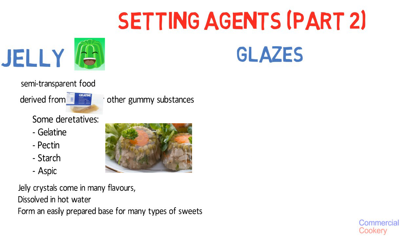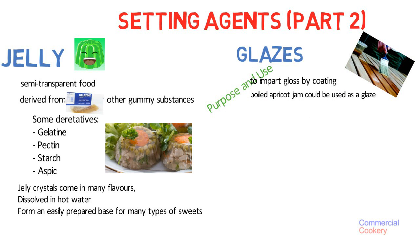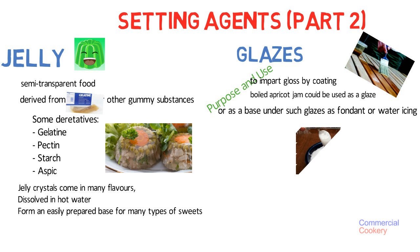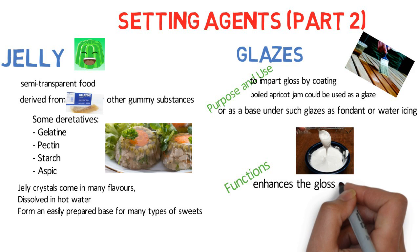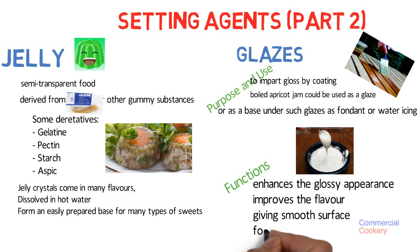The second one is the glaze. Glazes are used to impart a gloss by coating. White apricot gems can be used as a glaze or as a base under such glazes as fondant or water icing. It enhances the glossy appearance, improves flavor, gives a smooth surface, and forms an elastic coat which prevents baked goods from drying out.